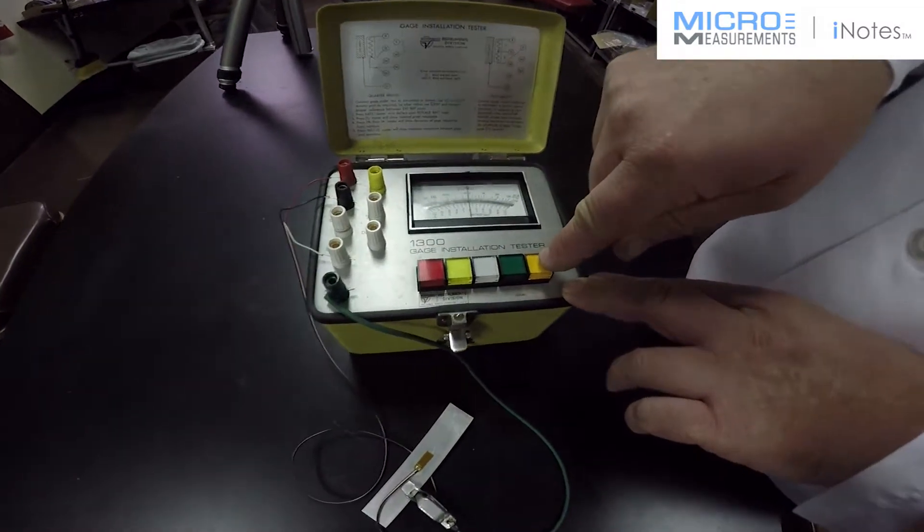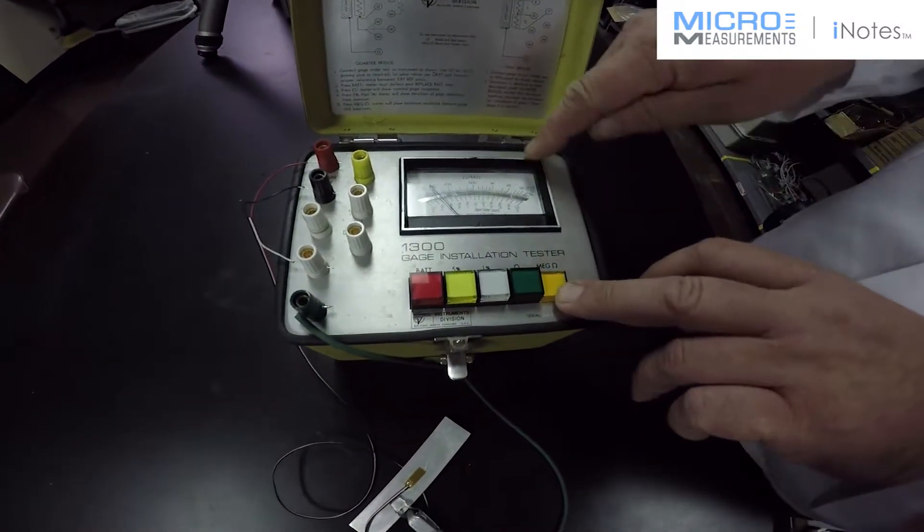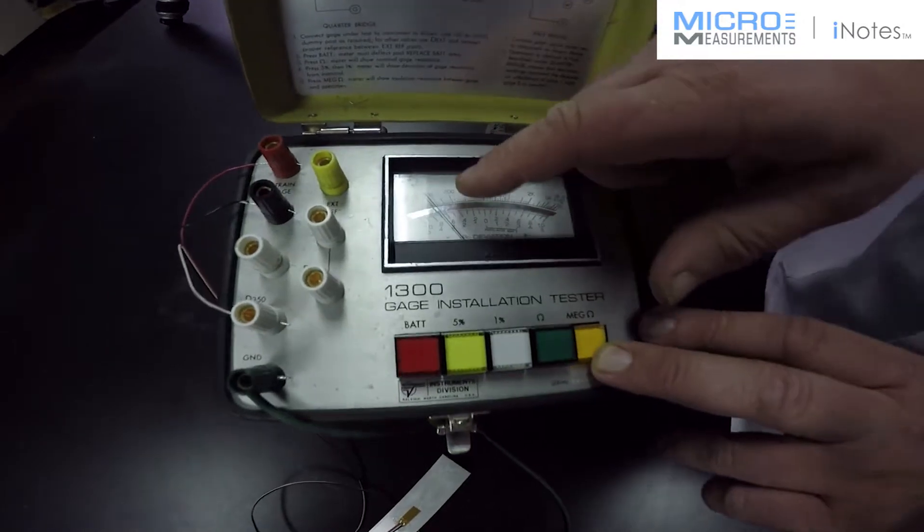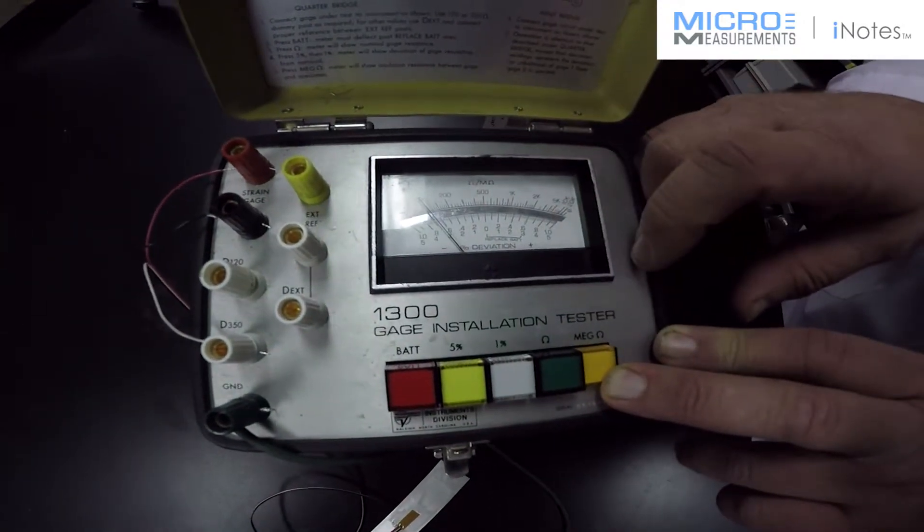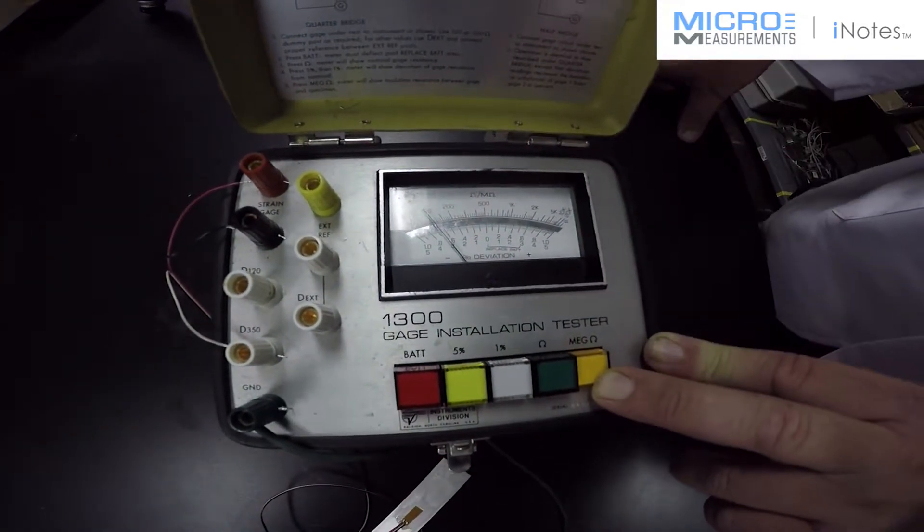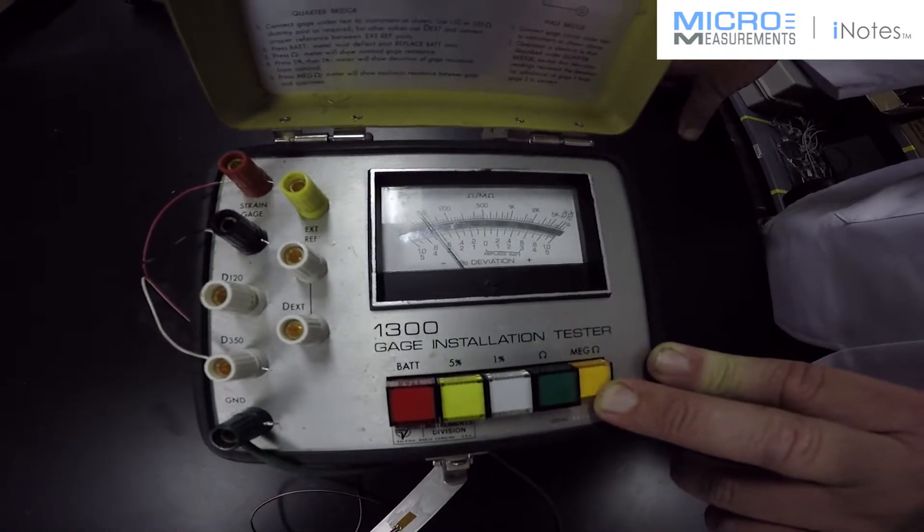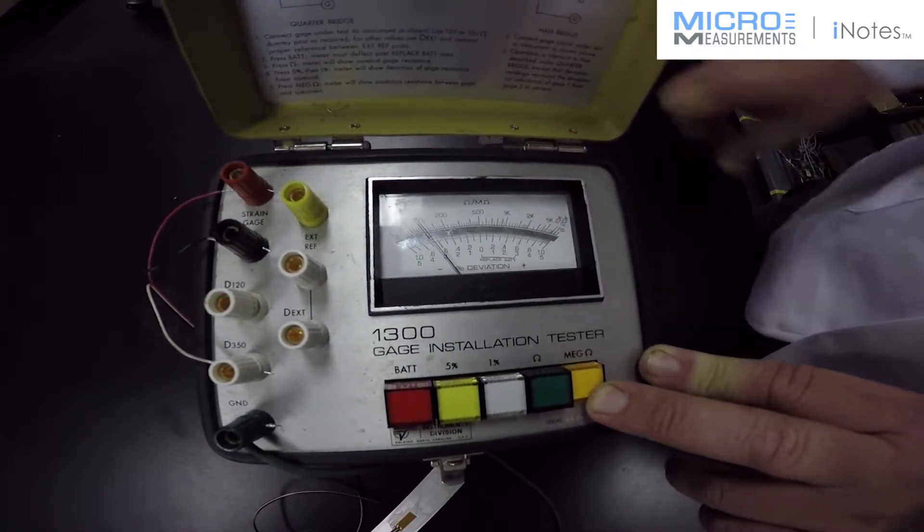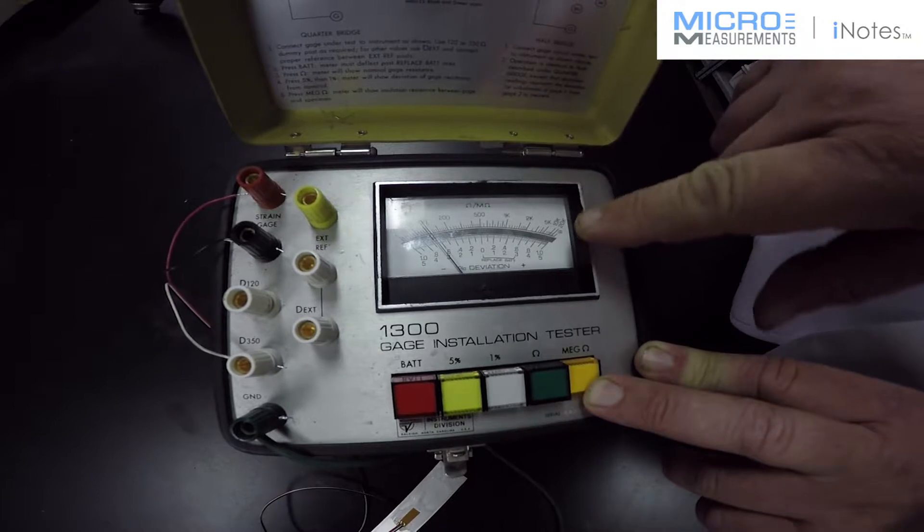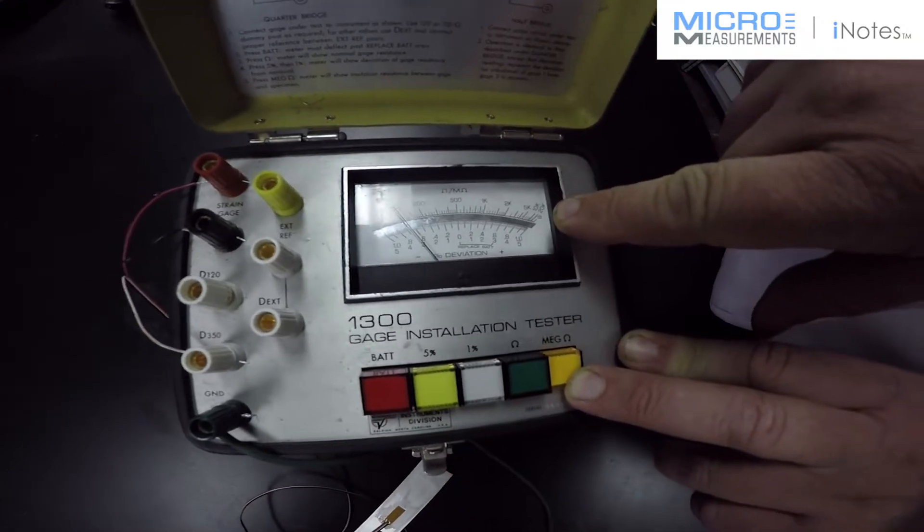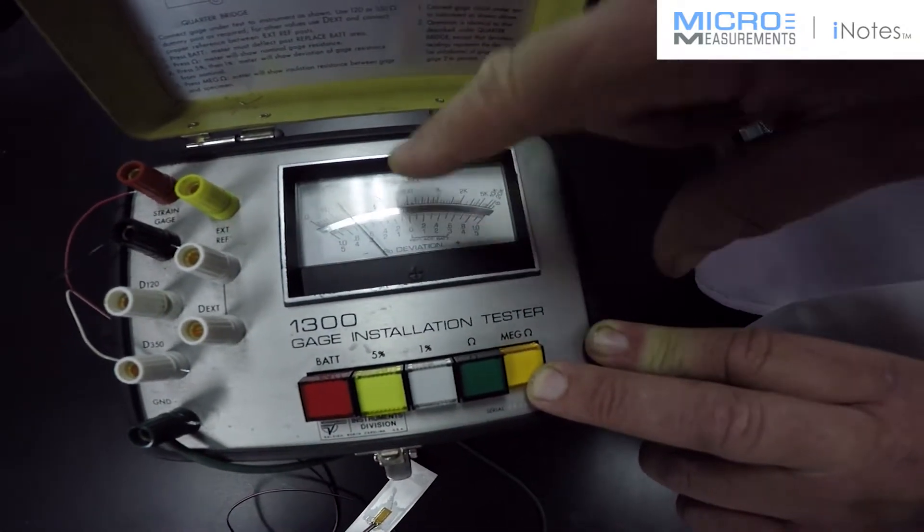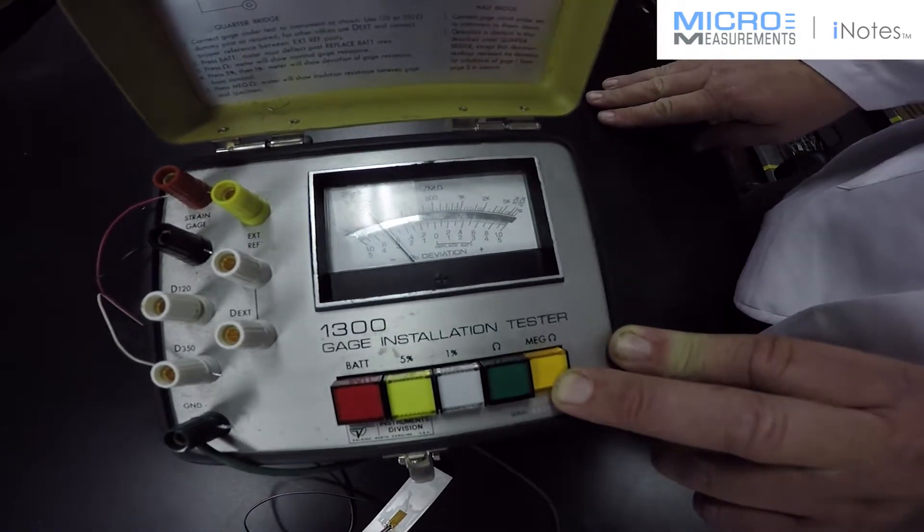So I'm going to press the mega ohm button. And on the top scale, I can see that right now it's reading about 100 mega ohms. That's too low. What you want to see with the strain gauge is up here on this end, about 10k mega ohms. It's kind of like the go or no go. If it's less than that, I've got problems I want to fix.